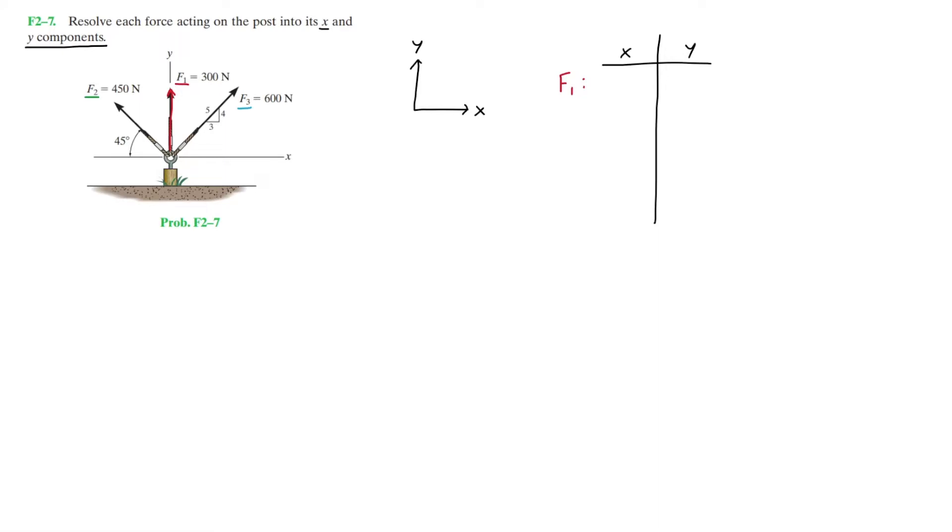The X component is simply going to be zero. Since it's only acting in the vertical direction, there is no angle. So that basically means F1 is already in its Y component. Hence, the Y component is simply going to be 300 Newtons. As you can tell, the F1 components are pretty straightforward.